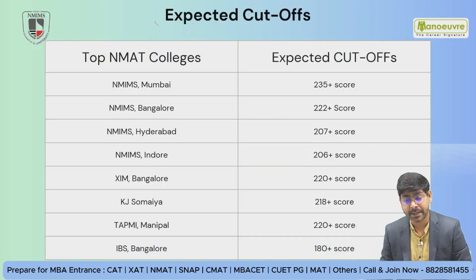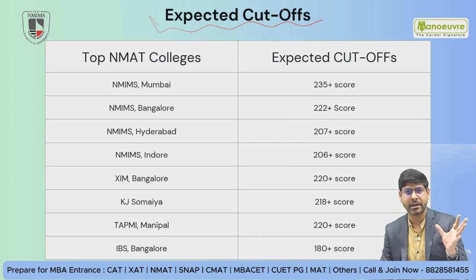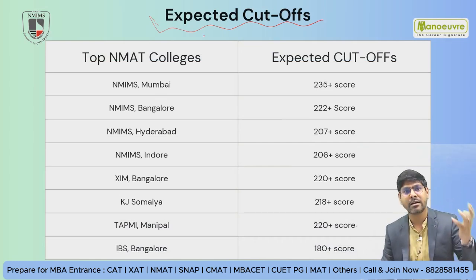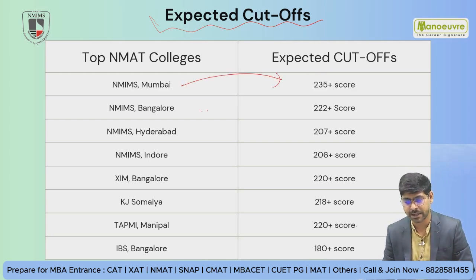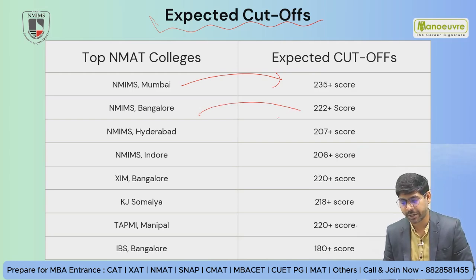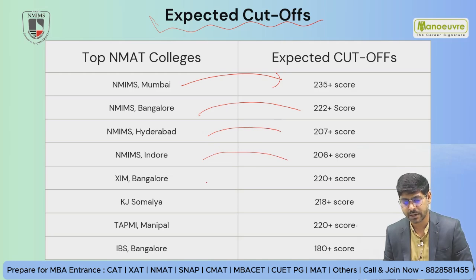Next is the expected cut-off. This cut-off will vary depending on exam toughness, but roughly: NMIMS Mumbai 135 to 140 plus, Bangalore 222 plus, Hyderabad 207 plus, NMIMS Indore 206 plus, XIM Bangalore 220 plus, and KJS Humeya 218 plus.